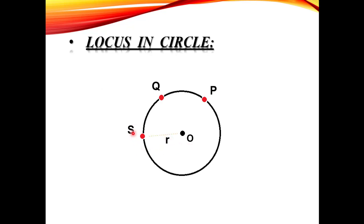O से लेकर S तक का जो Distance है, वो obviously Radius of Circle है — इसे मैं R कहता हूँ। O से Q तक का Distance भी Radius of Circle है, क्योंकि Circle का Radius चारों तरफ से बराबर होता है, तो यह भी R होगा। Similarly, O से P तक का Distance भी Radius of Circle होगा।